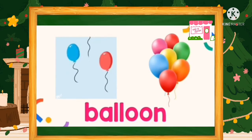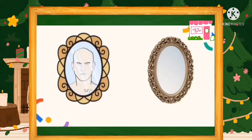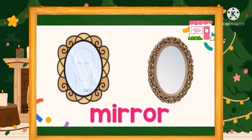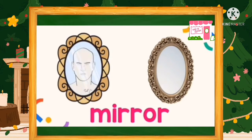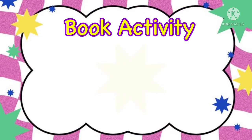How about this one, kids? Do you know what this is? Yes, it's a mirror. Mirror. What is the shape of the mirror? Great job. Mirror is an oval shape. Let's say it together: oval. For our book activity,